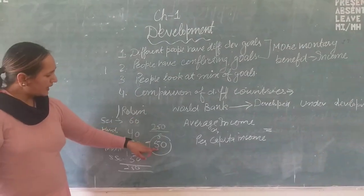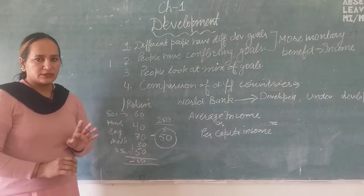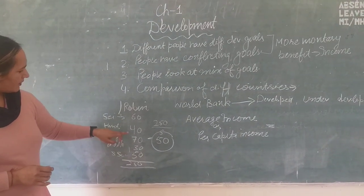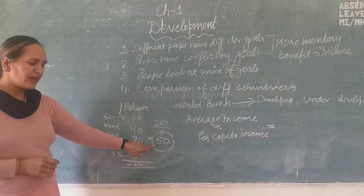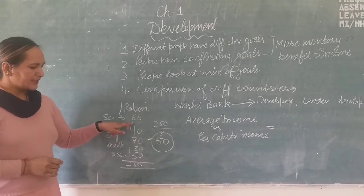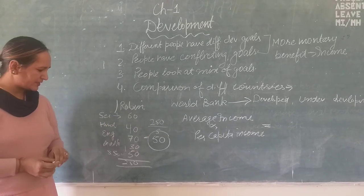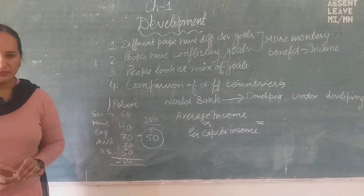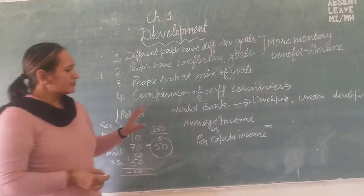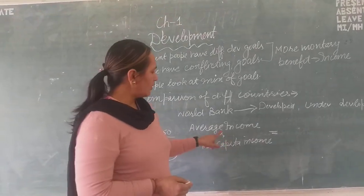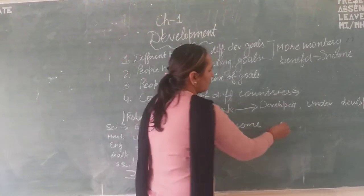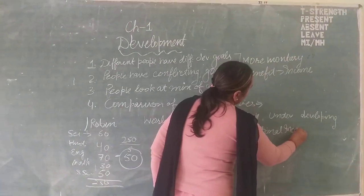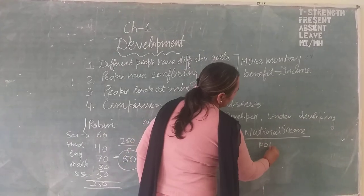Now, this 50 marks is an average figure. It does not mean that he has got 50 marks in all subjects. In English he got 70, that is more than average. In Science he got 60, also more than average. In Hindi and Maths he got 40 and 30, that is less than average. So, to calculate per capita income or average income, the formula is: national income divided by population of the country.